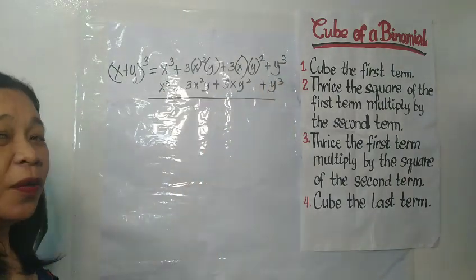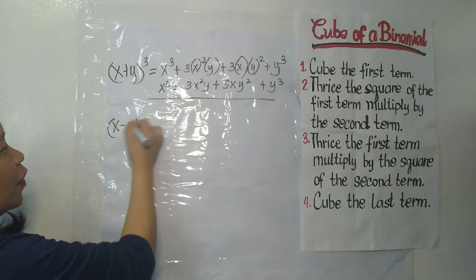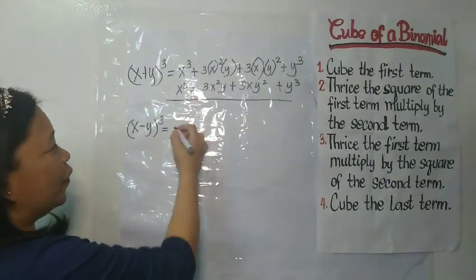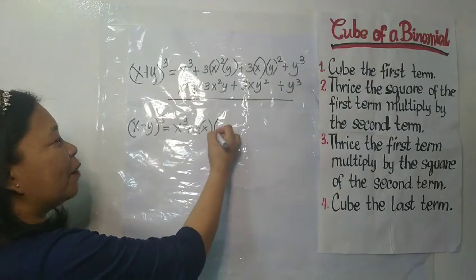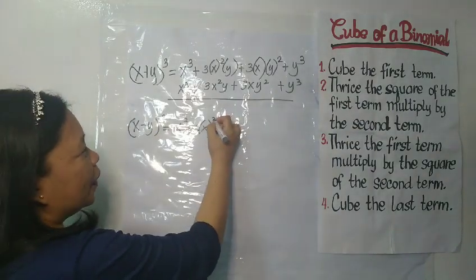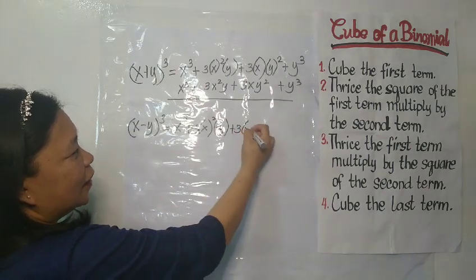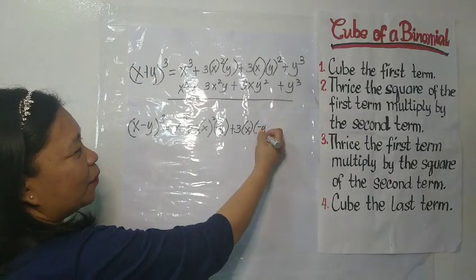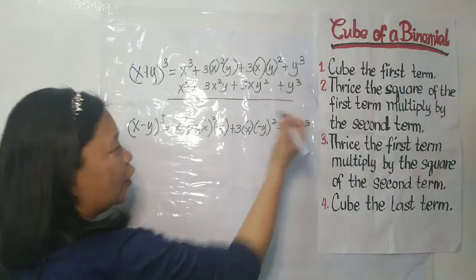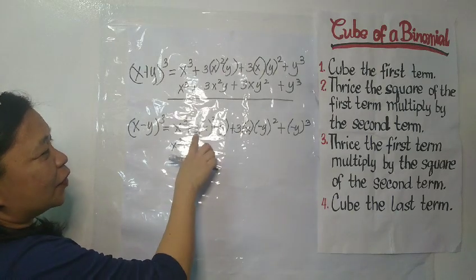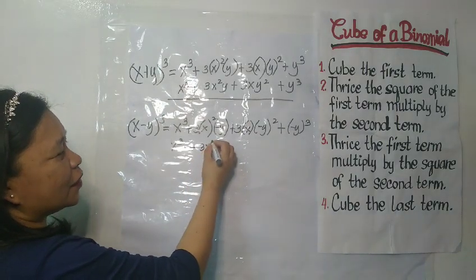What if there is a negative — (x − y) cubed? Again, cube the first term: x cubed. Plus thrice the square of the first term multiplied by negative y. Plus thrice the first term x multiplied by negative y squared. Plus negative y cubed. Bring down x cubed. So 3x² multiplied by negative y gives us negative 3x²y.